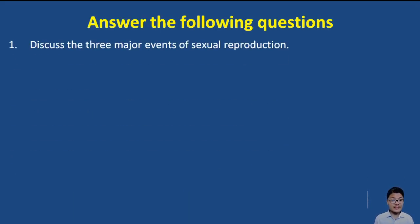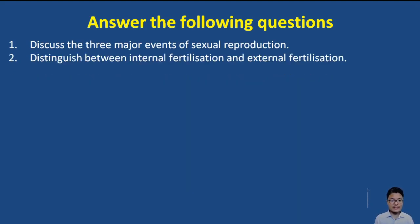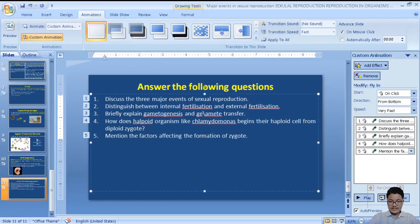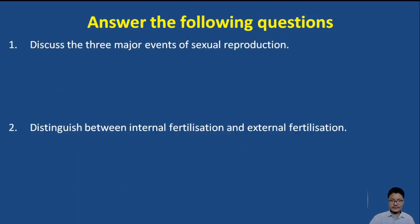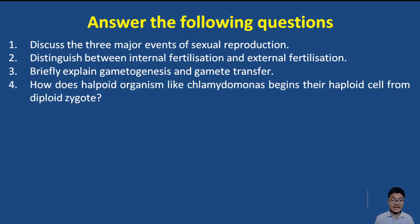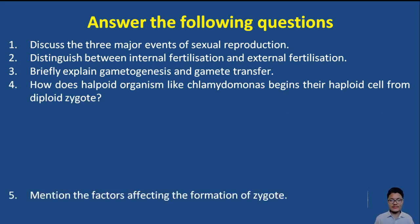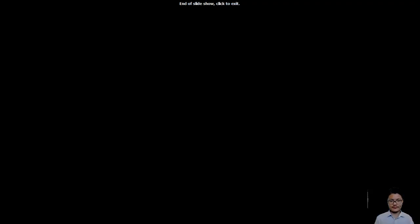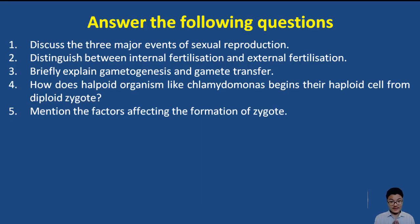With this, try to answer these questions: Discuss the three major events of sexual reproduction. Distinguish between internal fertilization and external fertilization. Briefly explain gametogenesis and gamete transfer. How do haploid organisms like Chlamydomonas begin their haploid life from a diploid zygote? Mention the factors which affect the formation of zygote. Stay safe and take care of your health. We'll see you in the next video.